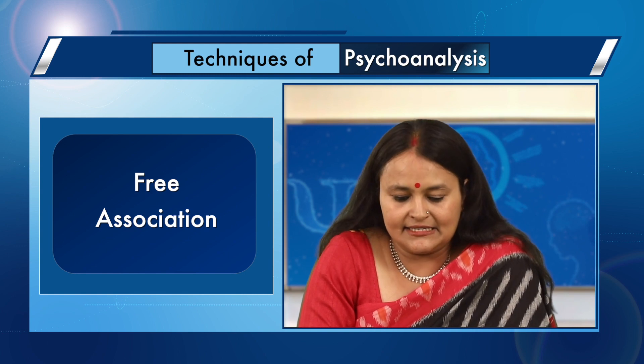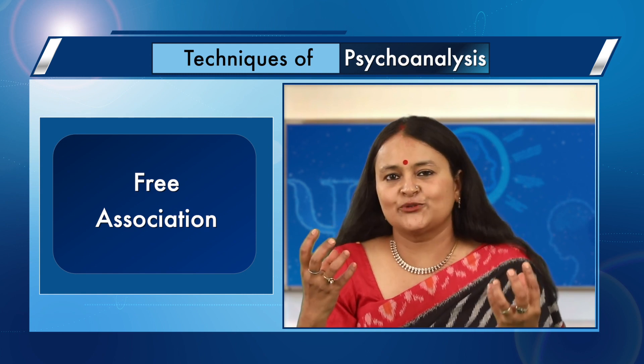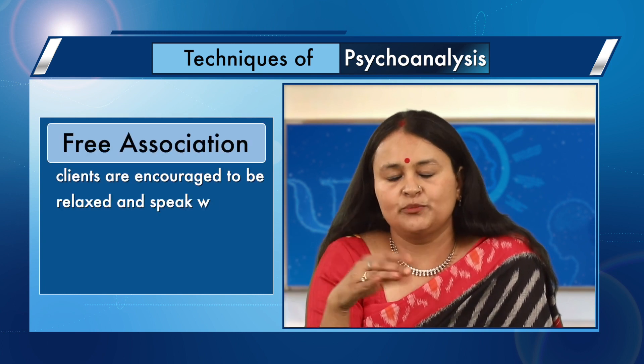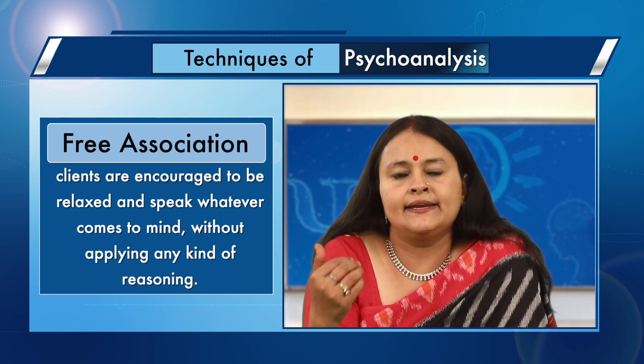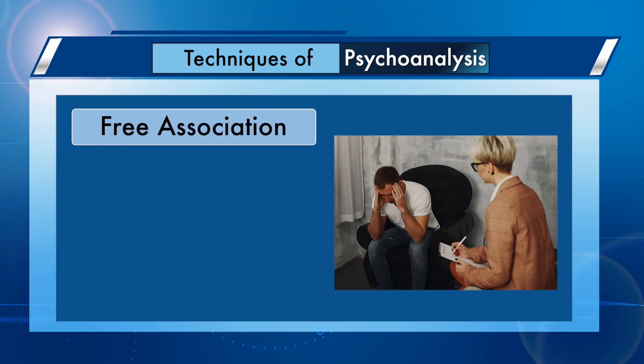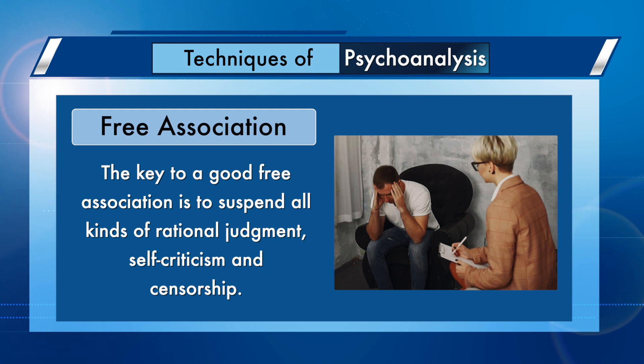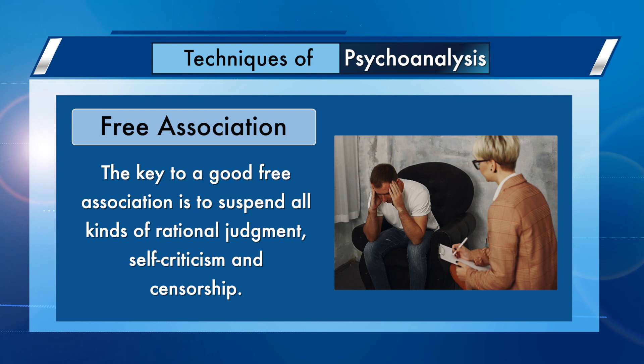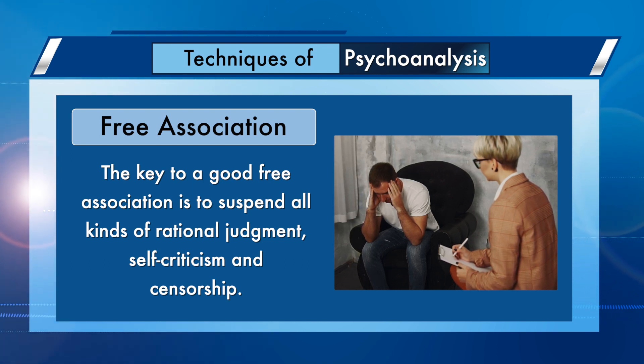The material for interpretation comes from other methods, including free association. In free association, clients are encouraged to be relaxed and speak whatever comes to their mind without applying any kind of reasoning or rational censorship. At times they are asked to recall childhood memories or difficult emotional experiences. The key to good free association is to suspend all rational judgment, self-criticism and censorship — you must not worry about what others will think. However, this is not an easy task.